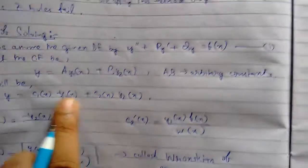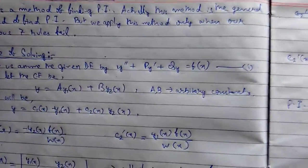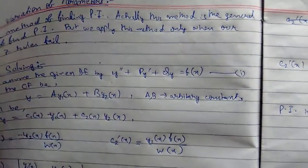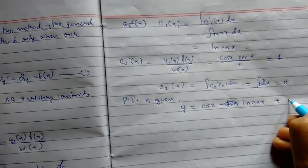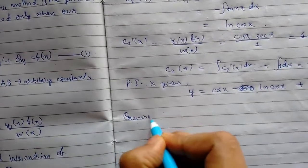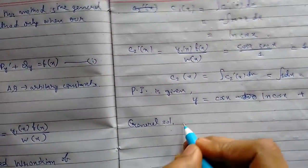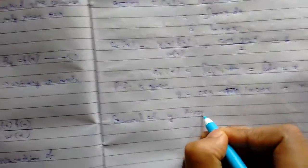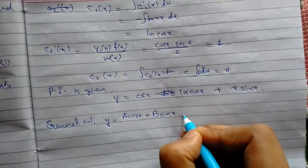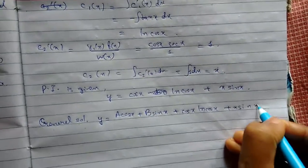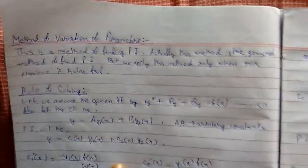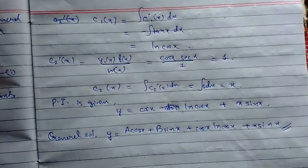So the PI = C1(x)·Y1(x) + C2(x)·Y2(x) = ln(cos(x))·cos(x) + x·sin(x). Therefore the general solution is Y = A cos(x) + B sin(x) + cos(x)·ln(cos(x)) + x·sin(x). This was all about the method of variation of parameters. If you like the video, hit the thumbs up button and subscribe to my channel for more videos. Thank you.